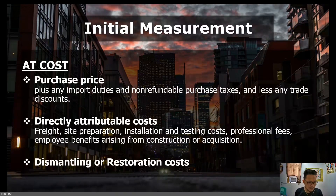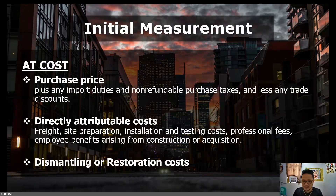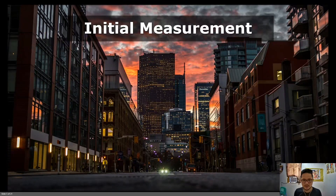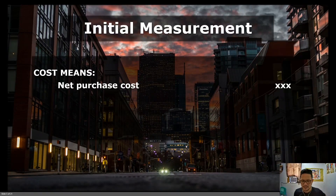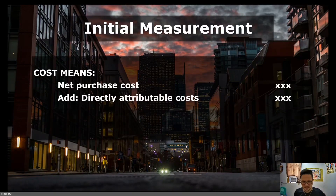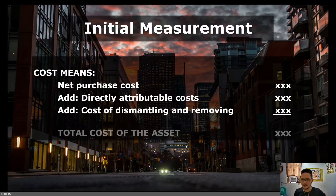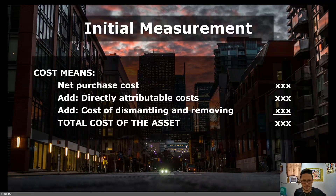You have the examples there. Last, if you are required by contract to dismantle or remove an item of PPE by the end of its life, you should include the cost of restoration or dismantling in your PPE cost. More about initial measurement: cost simply means the net purchase price — meaning net of trade discounts — plus directly attributable costs and dismantling costs. That should be your initial recognition.